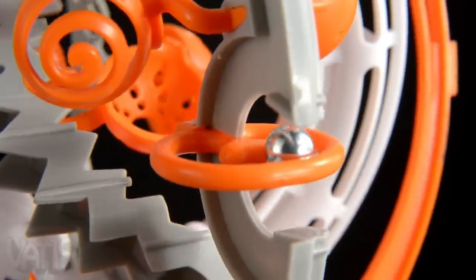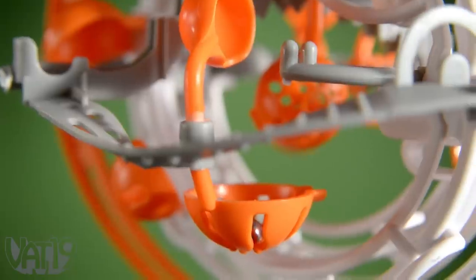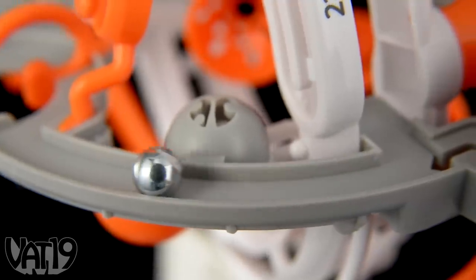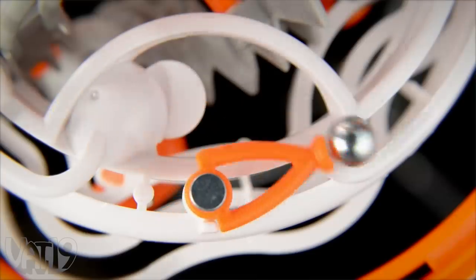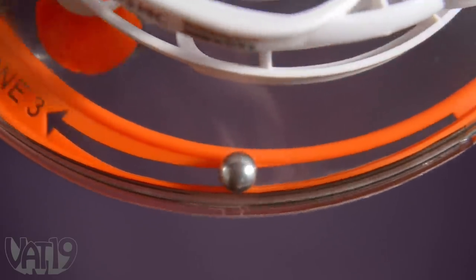It's part labyrinth, part Rube Goldberg machine, and part exercise in acrobatic dexterity. Flip, twist, and spin the Perplexus to roll the metal sphere along the path as you traverse 80 challenging events and six checkpoints in three distinct stages.